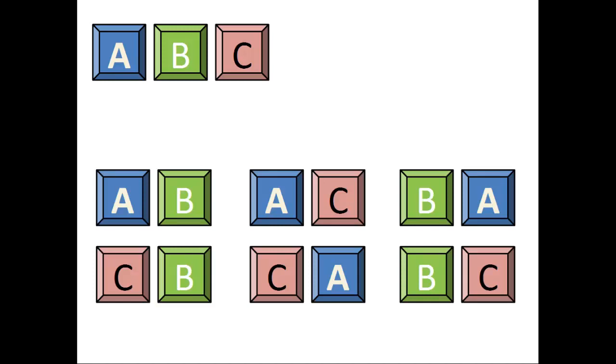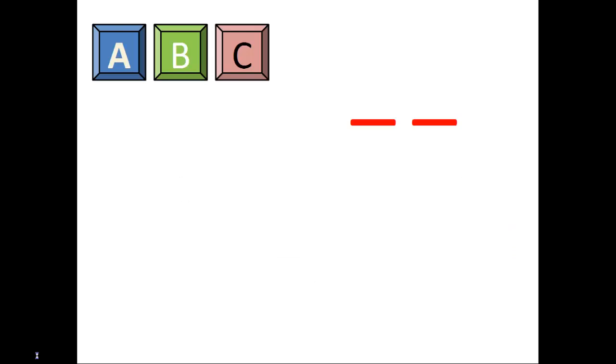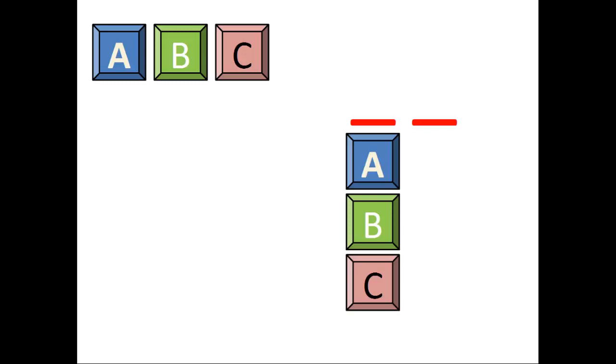But let's think this problem through. We start out with three letters and we want to choose two of them. For the first letter, we can choose any of the three letters, A, B, or C. So there are three options.